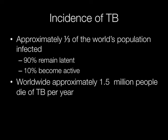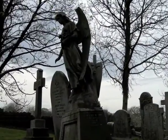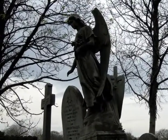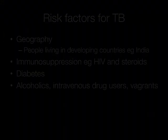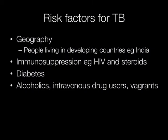And worldwide approximately one and a half million people a year die of TB. People at particular risk of TB are those living in developing countries such as India, those who are immunosuppressed, for example people suffering from HIV and people receiving steroids. Diabetics, alcoholics, intravenous drug abusers and vagrants are also at increased risk of developing TB.